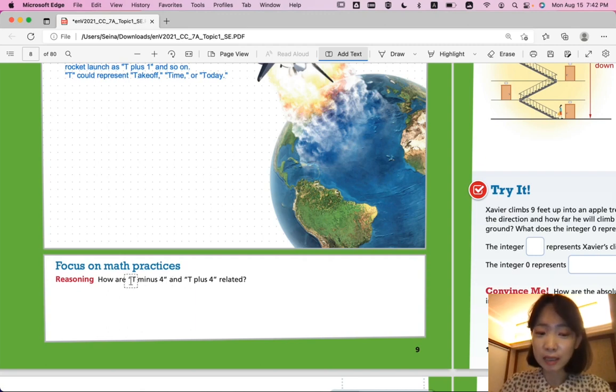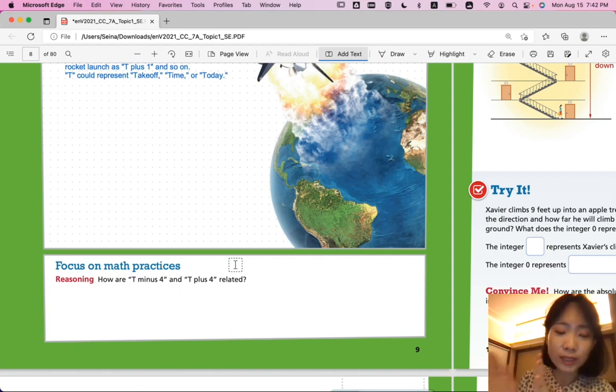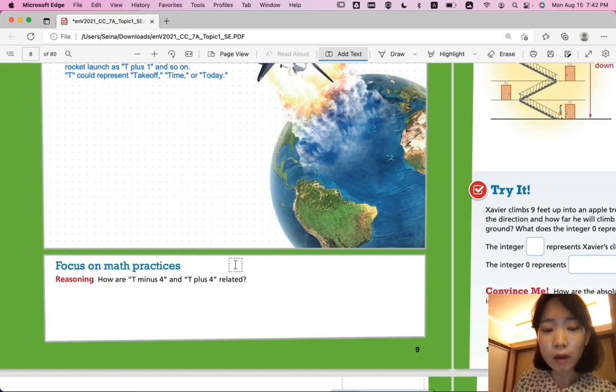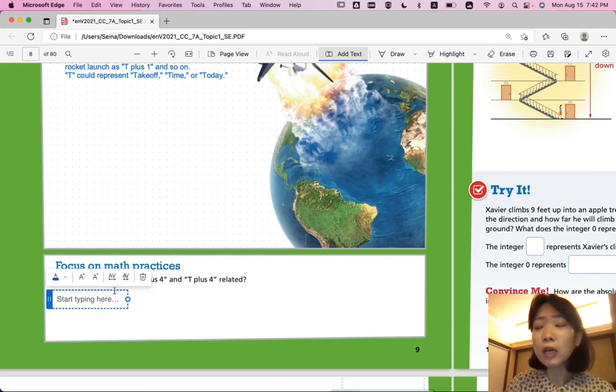Well, they both have T and 4. But minus and plus are the different wordings, right? So how are they related in terms of T? You know, T-minus-4 is 4 units away from T. T-plus-4 is also 4 units away from T. So they're both 4 units away from T. 4 counts away, right? So their distance from T is the same.